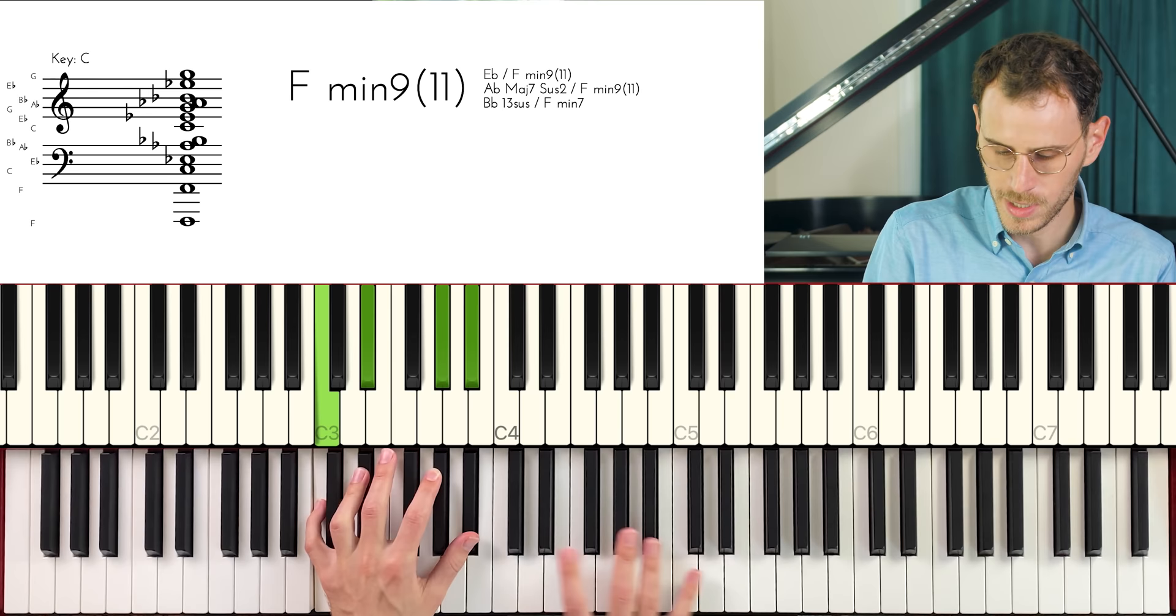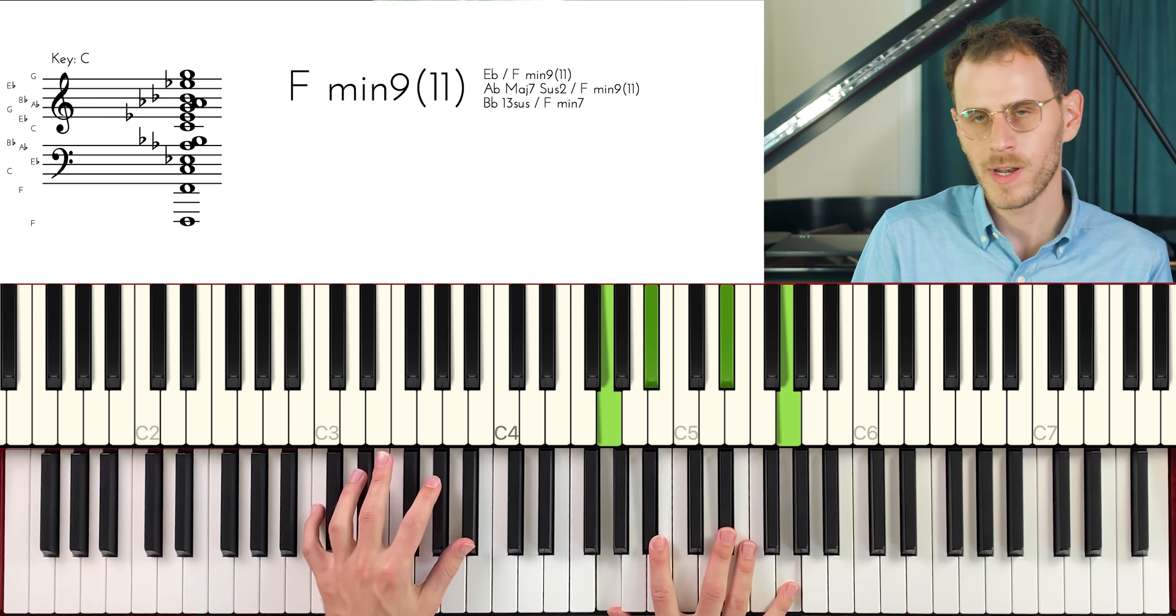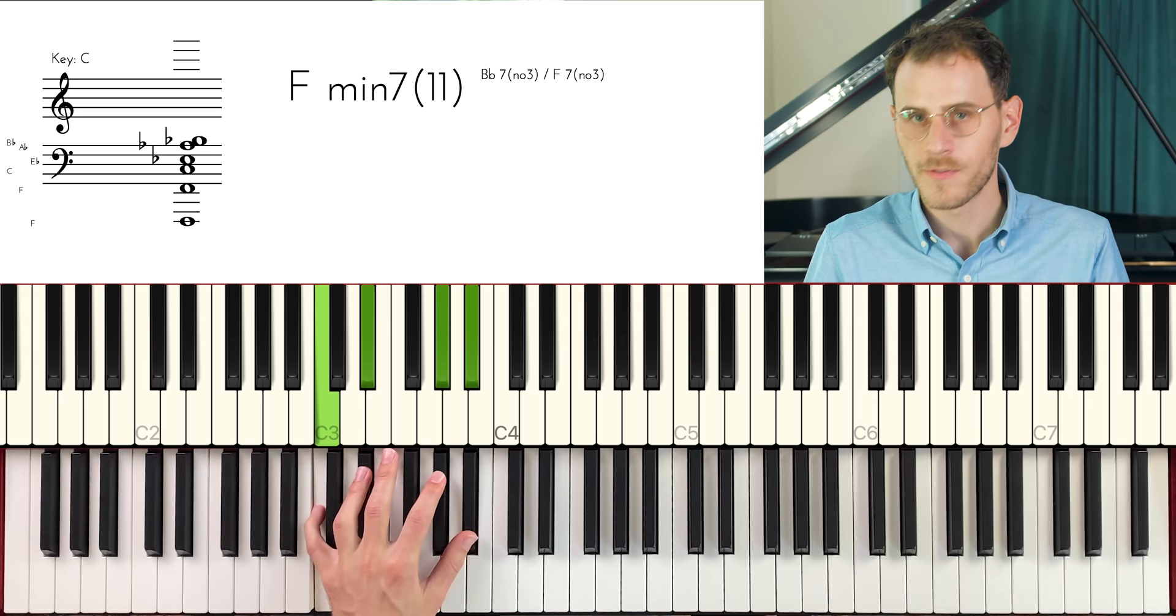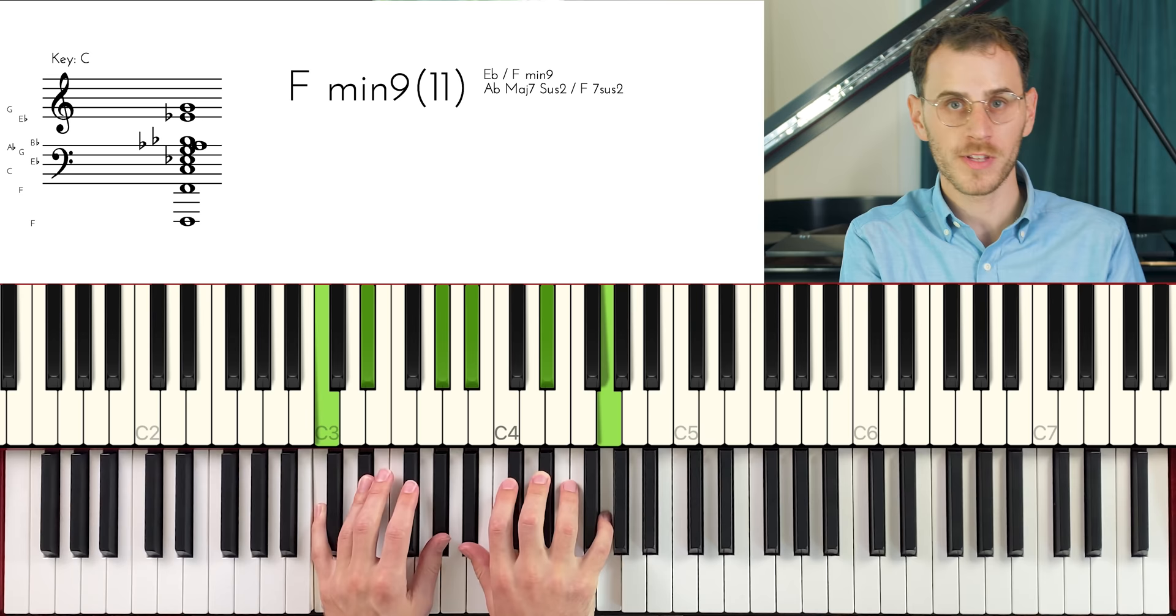Those are our two cells, our two shapes, right? Might be better to think of these in terms of shapes as opposed to melodic cells. I really like that, right? And of course, as part of this, you can always practice everything descending as well. Man, you get some really, really nice sounds out of this, right?